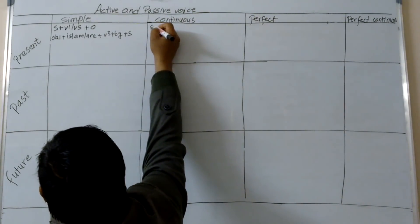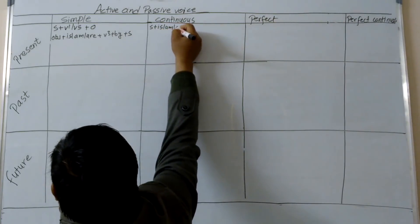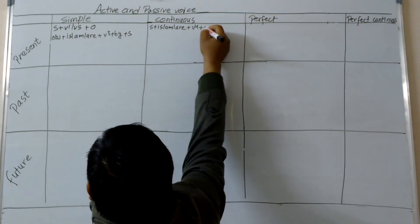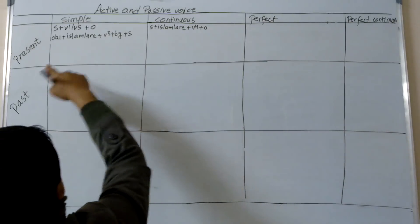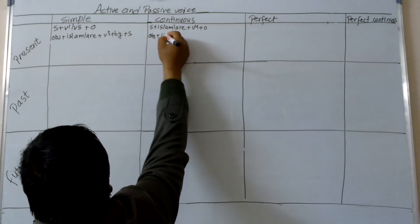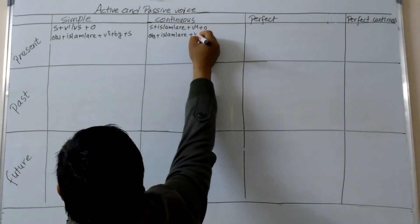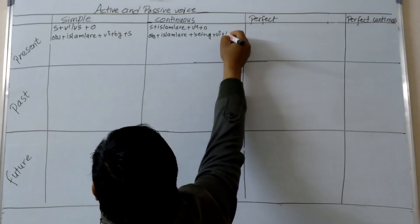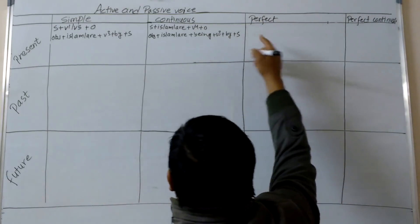In present continuous, the active voice formula is subject plus is/am/are plus V4 plus object. The formula of passive voice in present continuous is object plus is/am/are plus being plus V3 plus by plus subject.